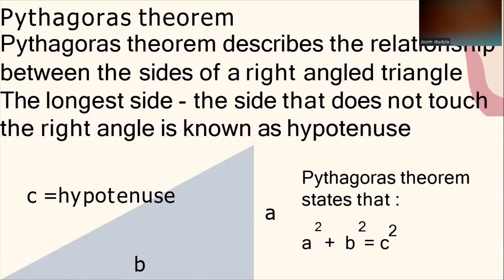Pythagoras' Theorem describes the relationship between the sides of a right-angle triangle. The longer side that does not touch the right angle is known as the hypotenuse. For this triangle, Pythagoras' Theorem states that a² + b² = c². In this diagram, it shows you which is c (hypotenuse), which is a, and which is b.